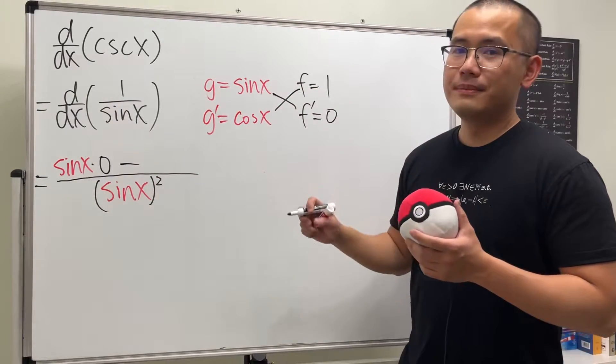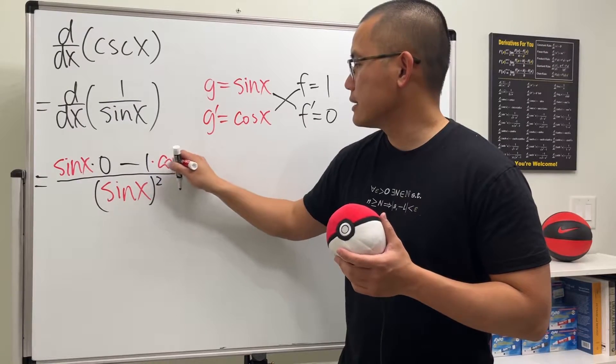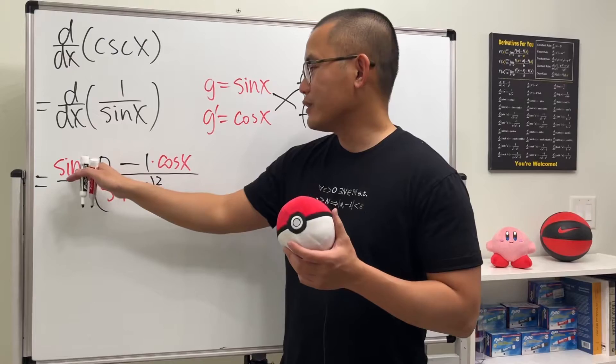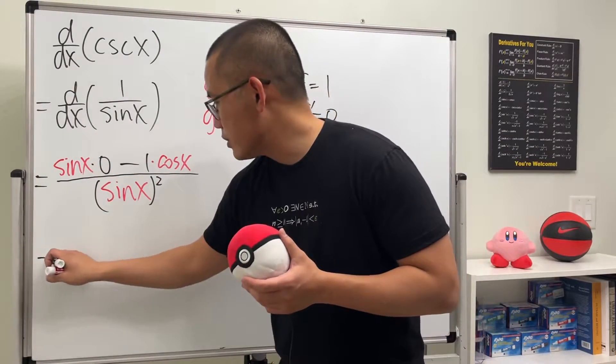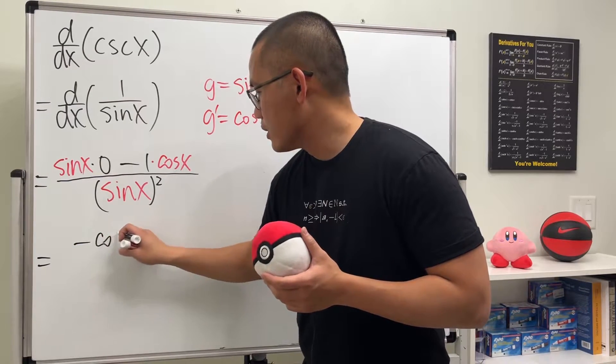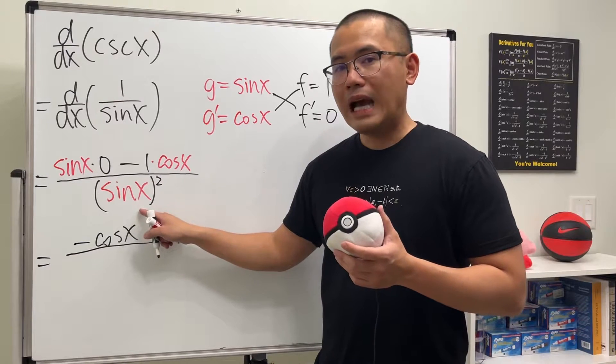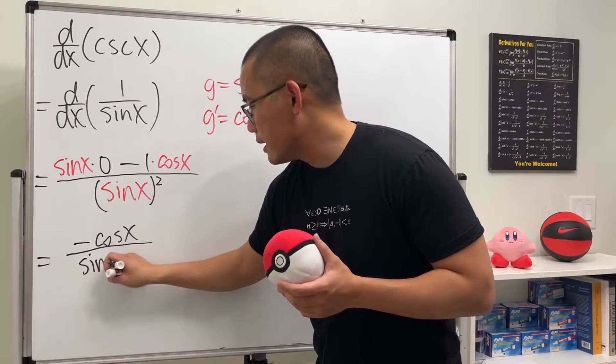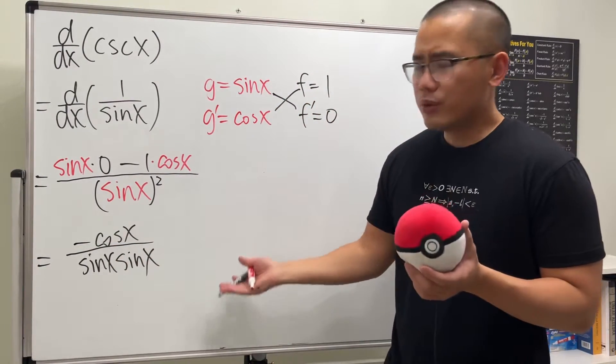This times that, right? So we have one times cosine x. Alright, so so far so good. But of course, we know that this right here is equal to zero, and right here we have negative cosine x. So let me just write that down right here. We have negative cosine x on the top, and over here we have sine x squared, which means we have sine x times sine x.